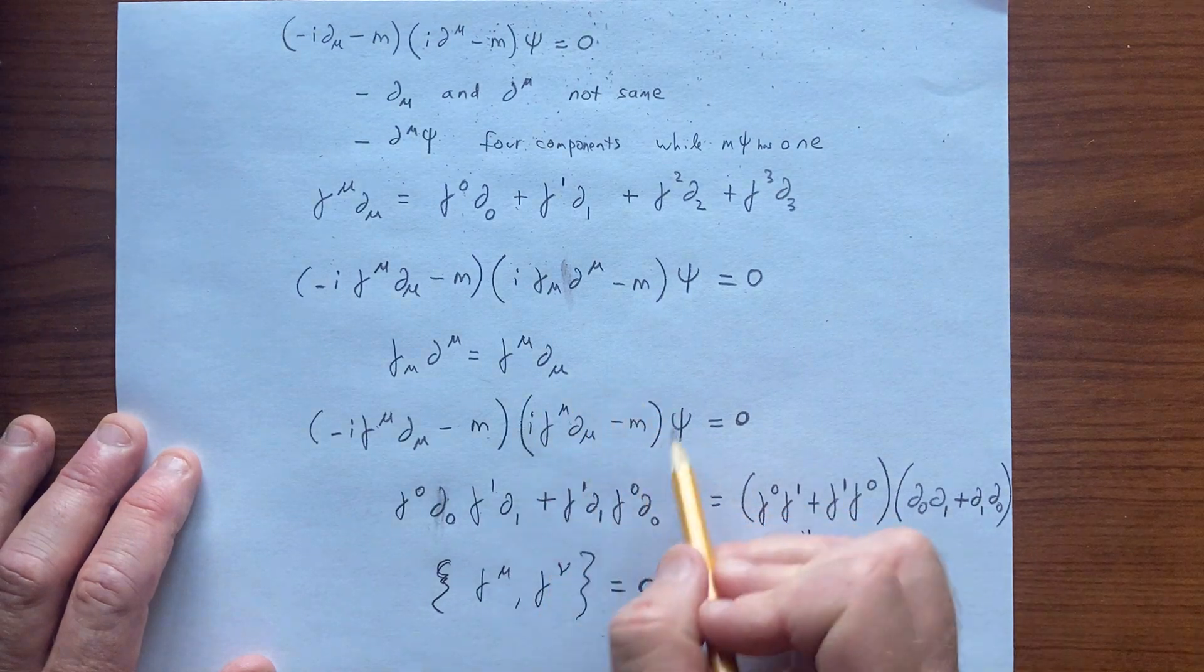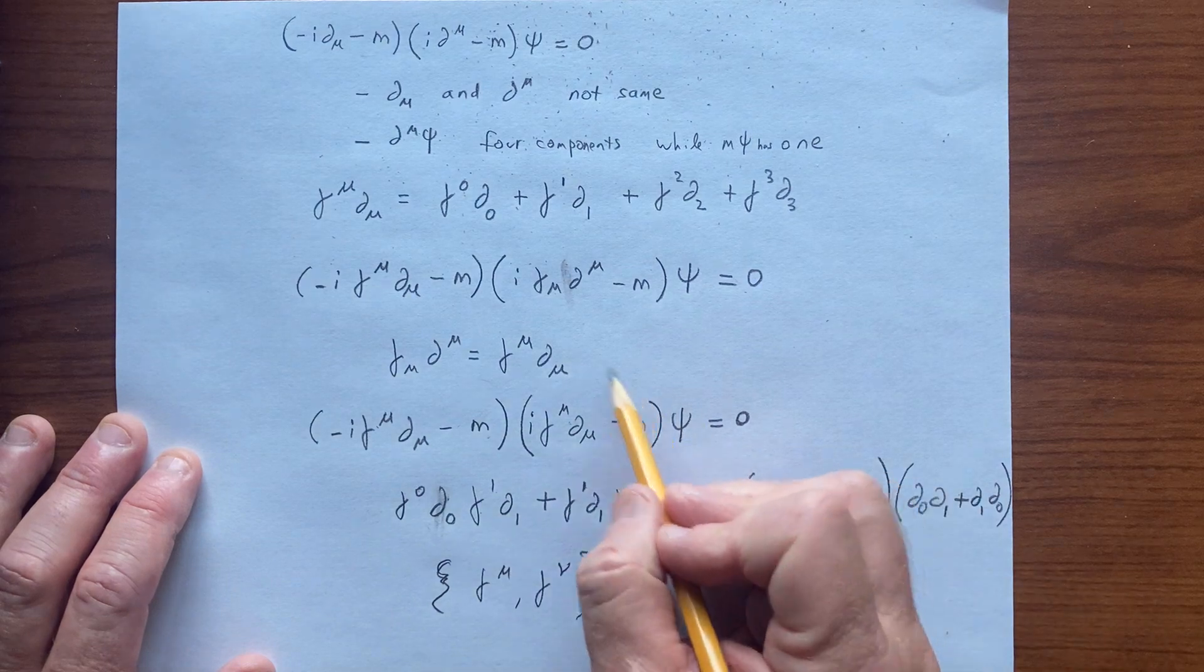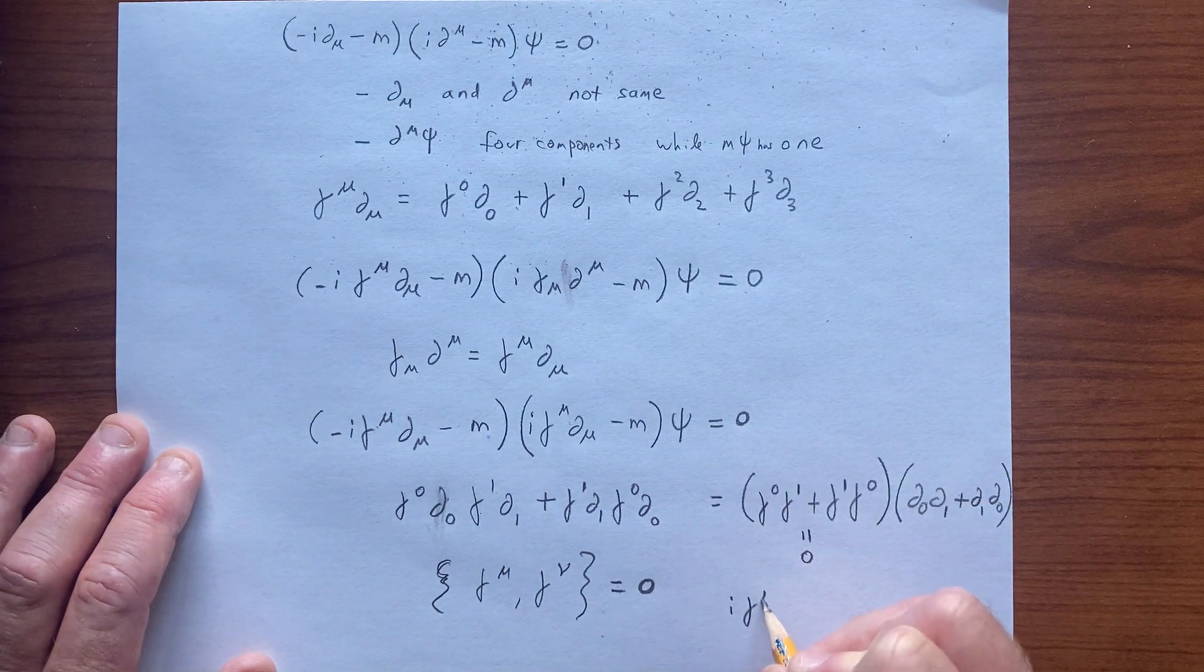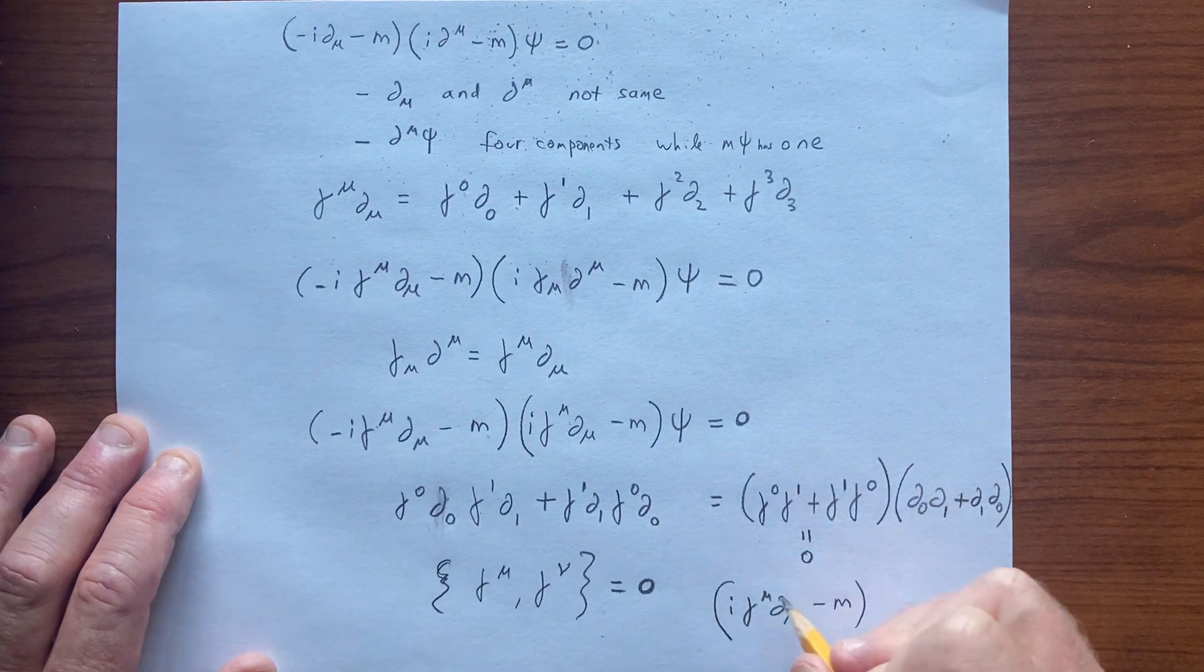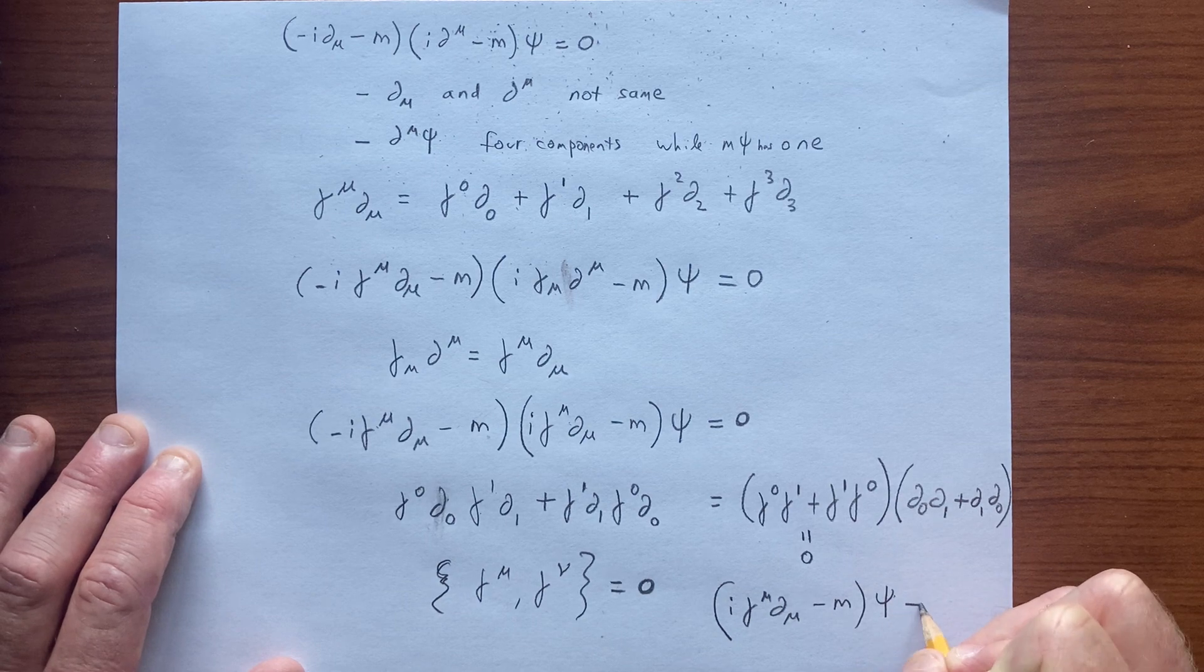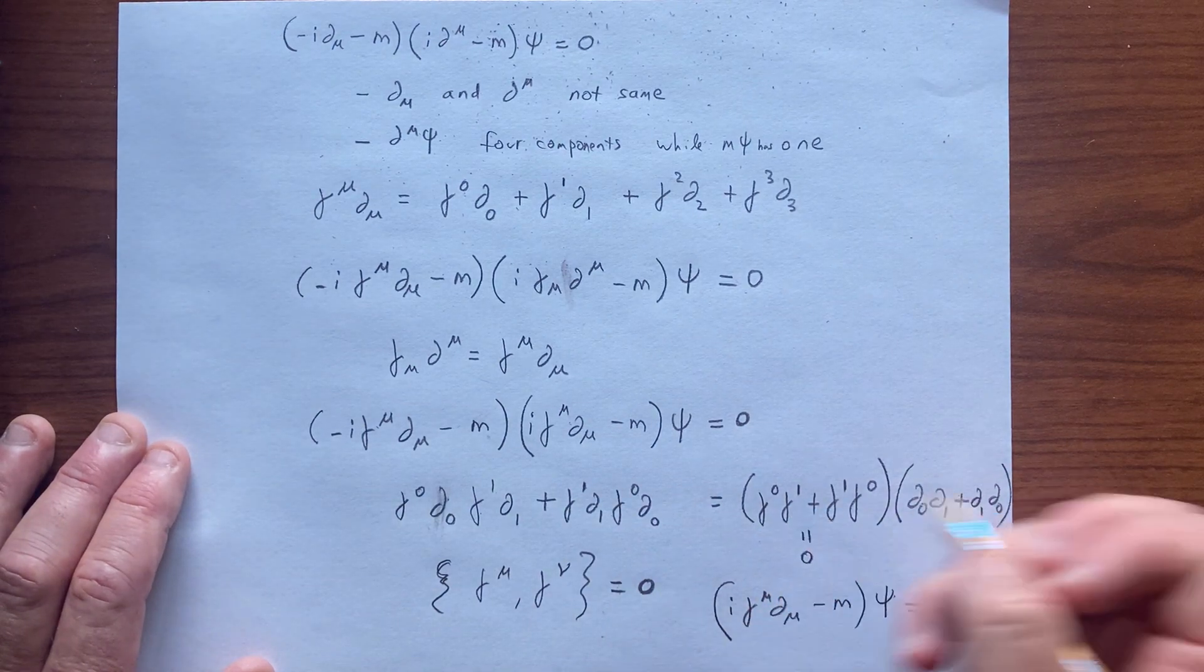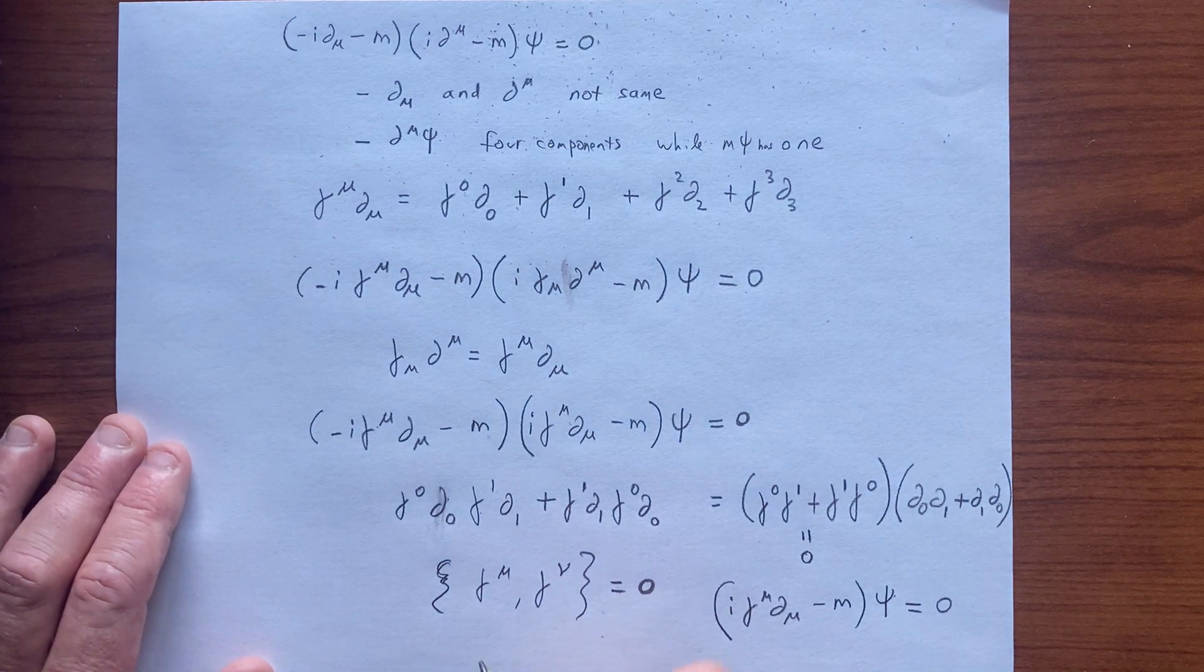So notice this is the Dirac equation. We're coming to the Dirac equation—it's this object here. We have a meaningful equation that does have the properties we're looking for: it's one derivative on this solution. But we're led to these other objects that we need to explore—they have this property.